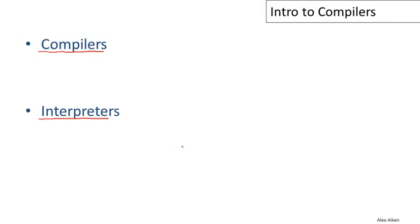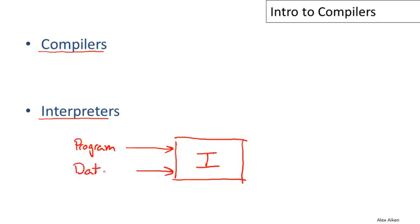So what does an interpreter do? I'm going to draw a picture here. This box is the interpreter, labeled with a big I. It takes as input your program that you wrote and whatever data that you want to run the program on, and it produces the output directly, meaning that it doesn't do any processing of the program before it executes it on the input.